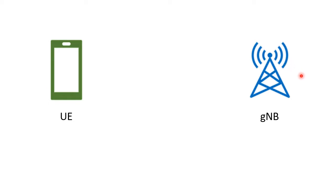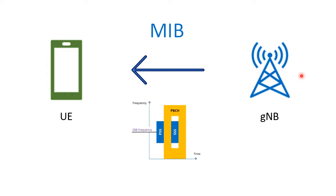Meanwhile, the base station or the 5G gNodeB will broadcast a message, usually the MIB — the Master Information Block. This is sent through the PBCH channel of the SSB block. The UE will detect this SSB frequency, and then the PSS and SSS for synchronization, and then the MIB is included in this PBCH. This SSB is usually 20 RBs in frequency domain and 4 symbols in time domain.